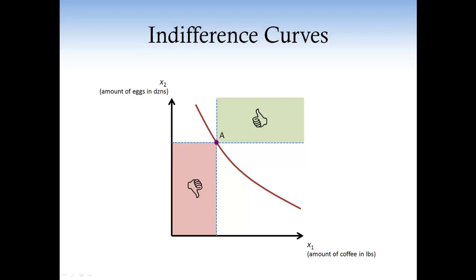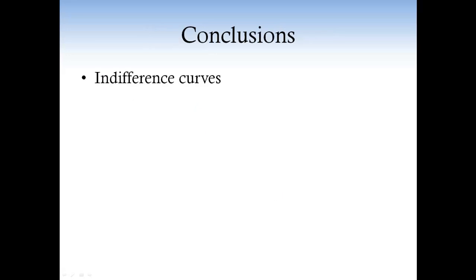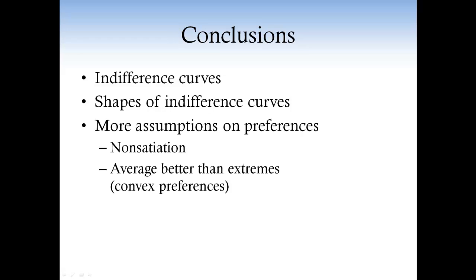As a special case, we want to see what happens if the consumer has preferences that look like this or like this, but in general, we'll consider preferences that give us indifference curves that are smooth and convex. This podcast was an introduction to the indifference curves, the shape of the indifference curves, and two more assumptions that we use in consumer theory: non-satiation and convexity of preferences.